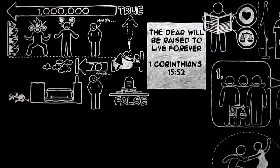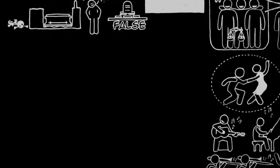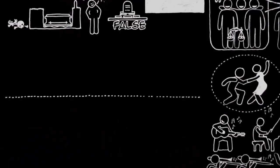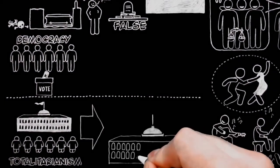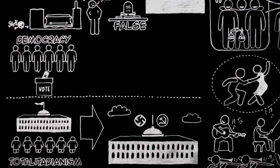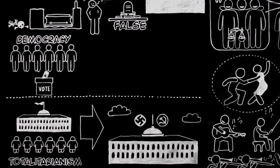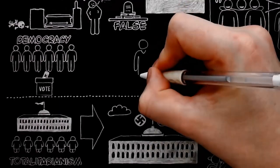And immortality makes this other difference, which, by the by, has a connection with the difference between totalitarianism and democracy. If individuals live only seventy years, then a state or a nation or a civilization which may last for a thousand years is more important than an individual.